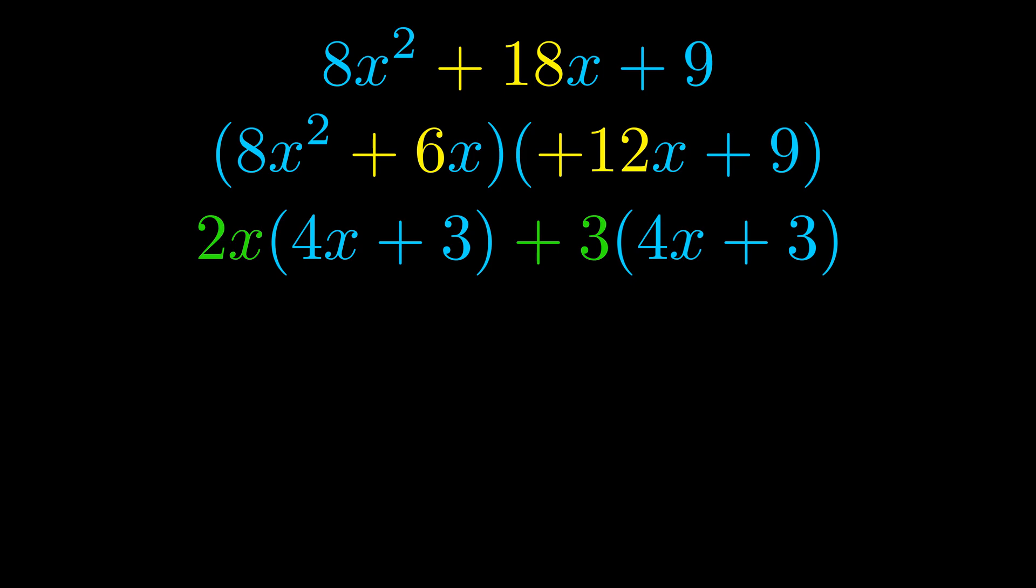Notice also how what remains inside of the parentheses is the same in both cases. The blue values are the same. Those blue values will become one of our factors and we will combine the two green values, the GCFs that we pulled out, to get the other one. And that is our fully factored equation.